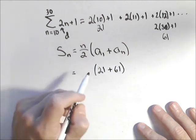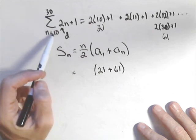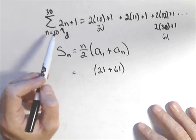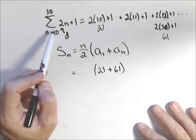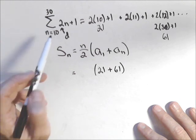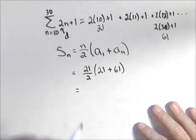Now the number of terms is where you've got to be careful. You might want to say it's 30 minus 10, so 20. But you've got to be careful because when you subtract that, you subtract out the 10th term, so you have to add it back in. It's always top minus bottom plus 1. So there's actually 21 terms in this series.